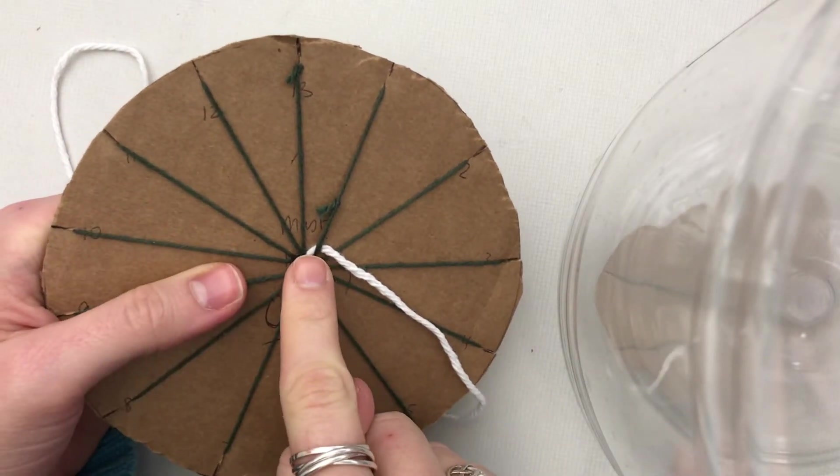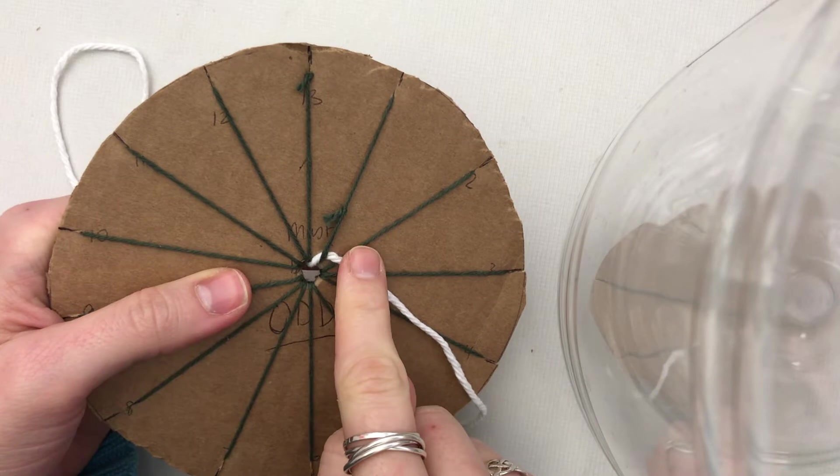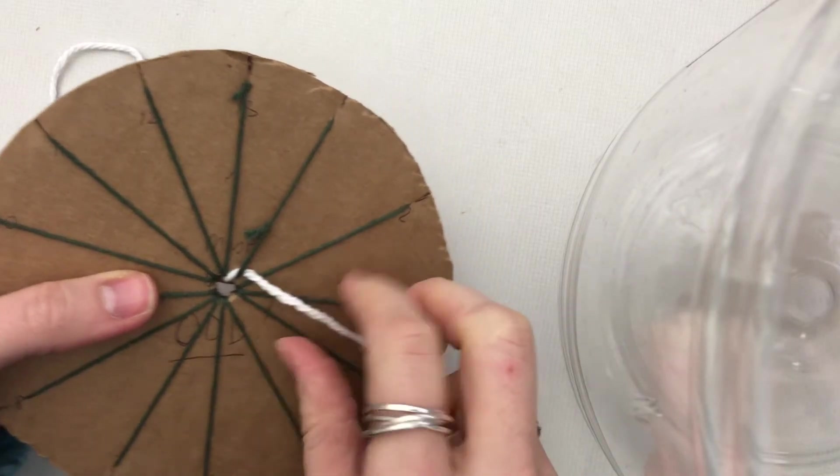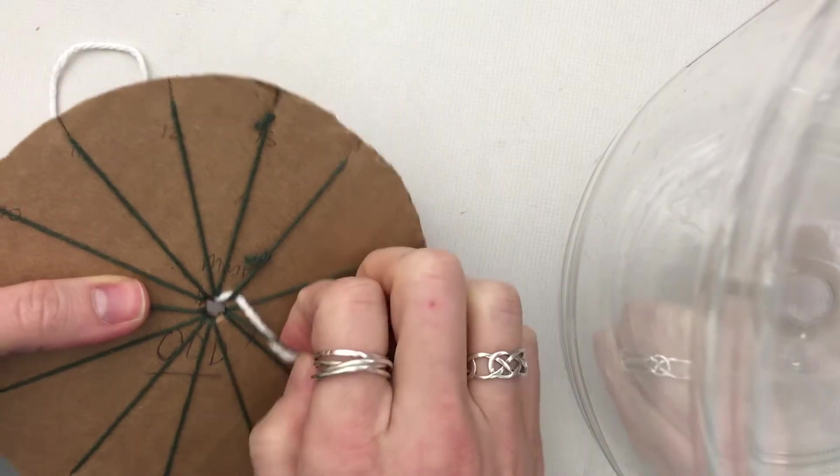Weaving is a process of going under a piece and then over a piece. Under, over, under, over. Kind of like red rover. So I went under, over.